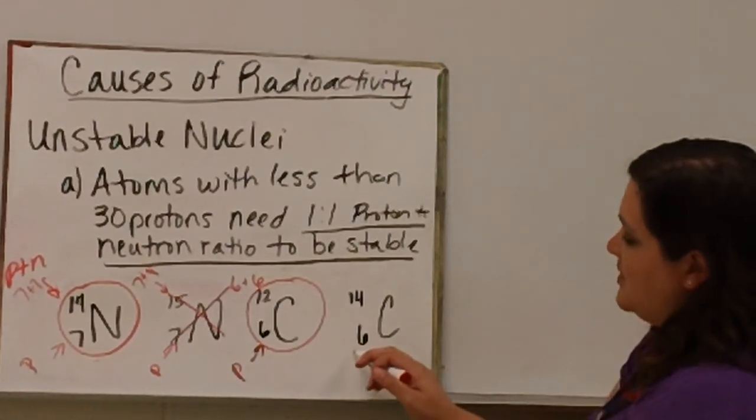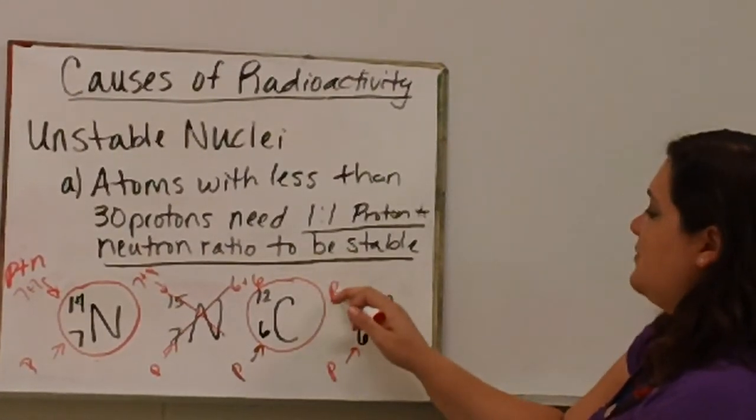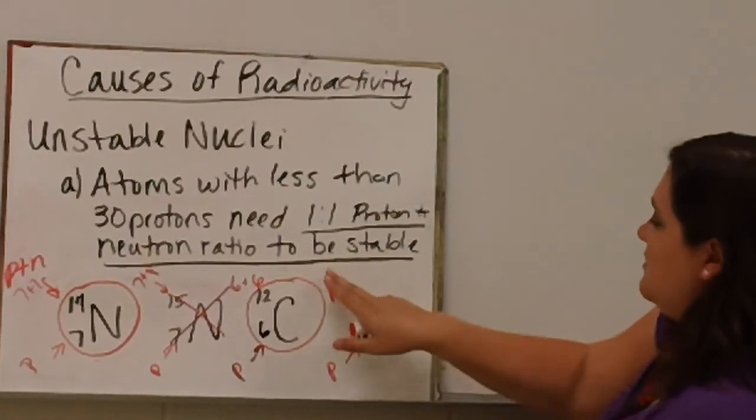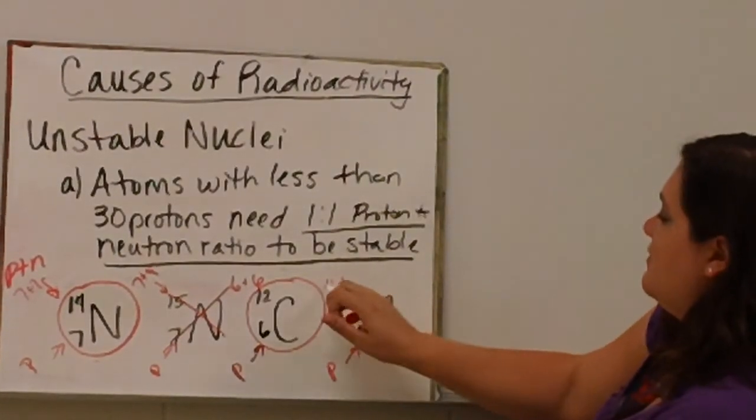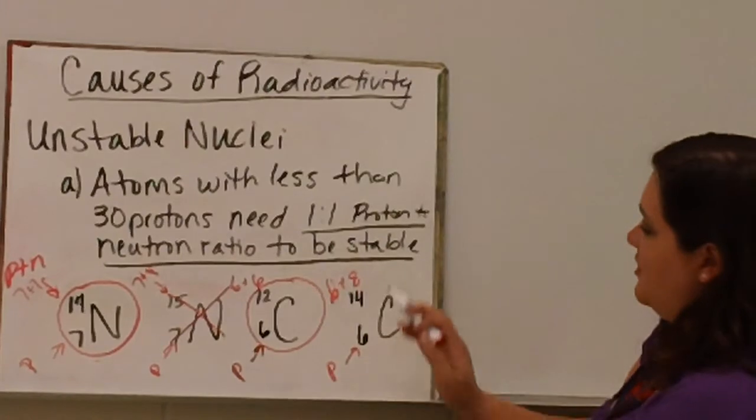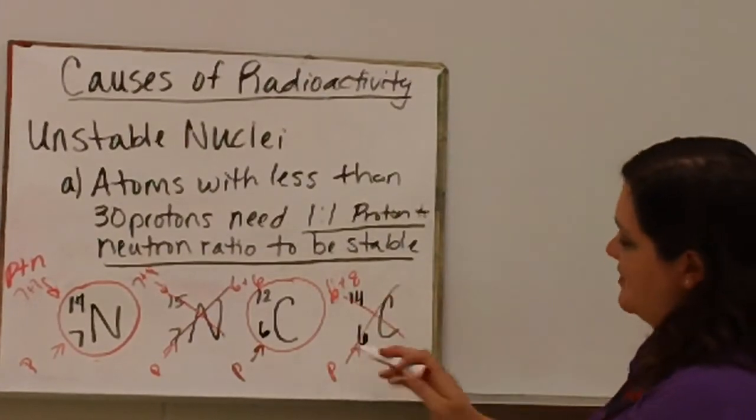So carbon-14, again, has six protons and a mass of 14. Then it has eight neutrons, which is not a one-to-one ratio. So that is not a stable nuclei.